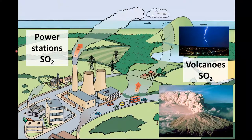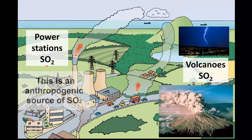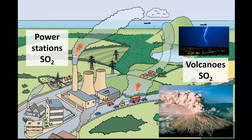Next we look at some sources of acidic gases such as sulfur dioxide and nitrogen oxides. Starting with sulfur dioxide, which is produced in power stations and volcanoes. When coal that contains sulfur is burned in a power station we have the formation of sulfur dioxide. Sulfur dioxide is also produced during a volcanic eruption, which is a natural source of sulfur dioxide.